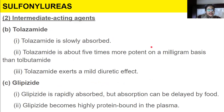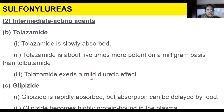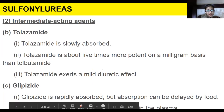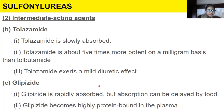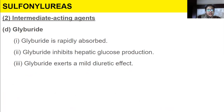Tolazamide is another intermediate-acting agent; it is slowly absorbed and is about 5 times more potent on a milligram basis, and it exerts a mild diuretic effect. Glipizide is another intermediate-acting drug; it is rapidly absorbed but absorption can be delayed by food, and it becomes highly protein-bound. Glyburide is also intermediate-acting; it is rapidly absorbed, inhibits hepatic glucose production, and exerts a mild diuretic effect.